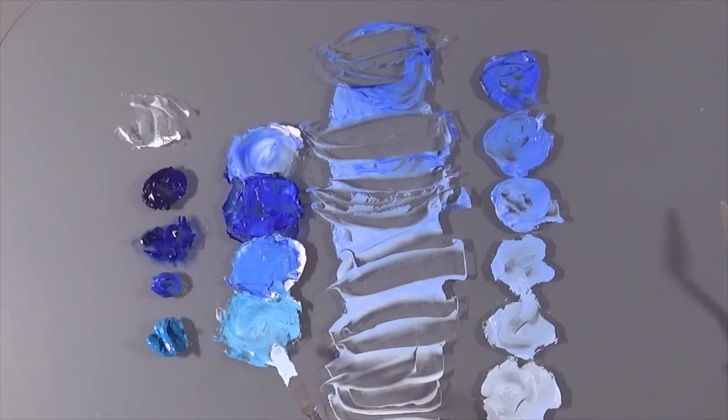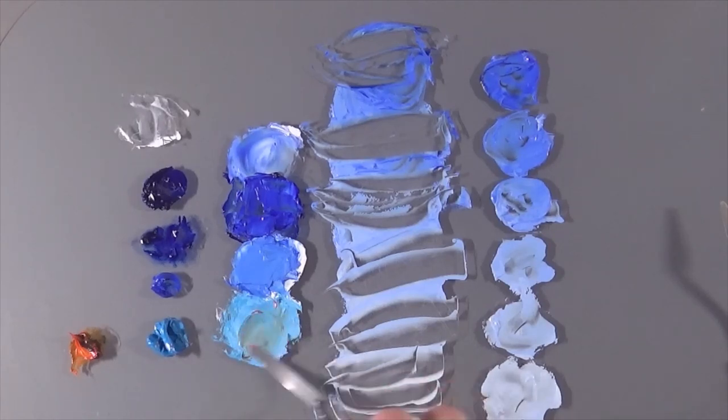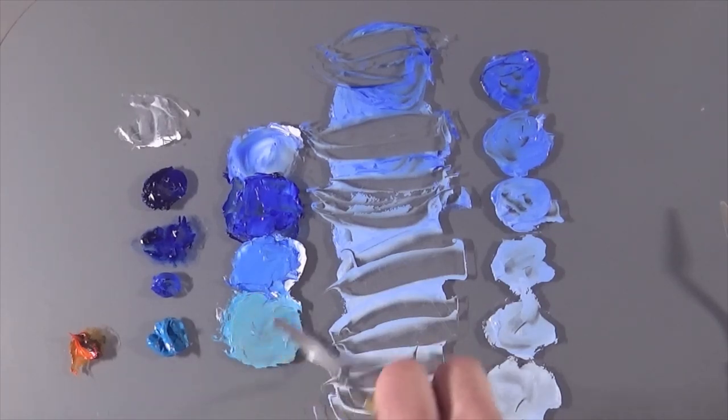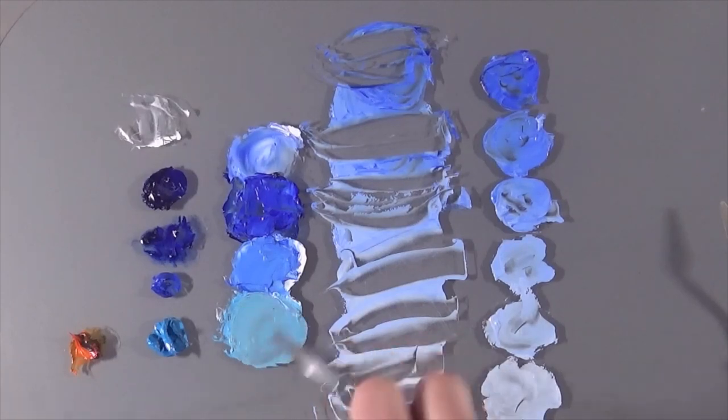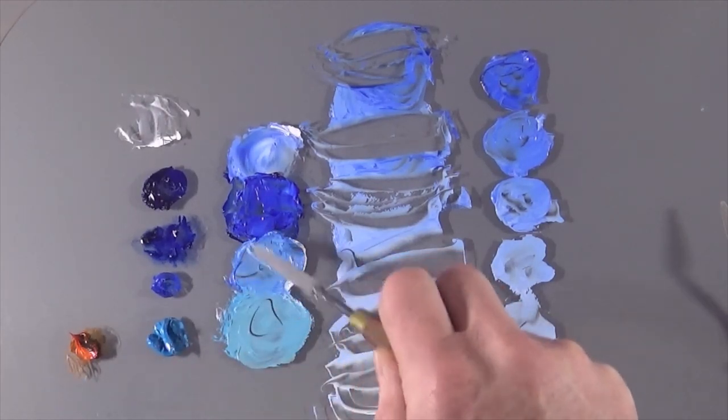Cerulean blue can sometimes need a touch of orange in to stop it being quite so turquoise when you put white through it. But just greying it out with the complementary color. I'll just show you that here now. Just with a tiny little smidge of cadmium orange. Just to calm that down.